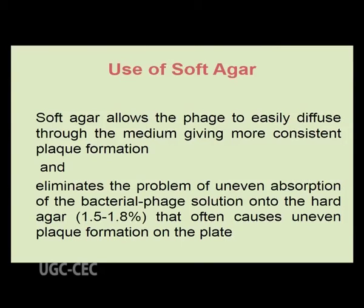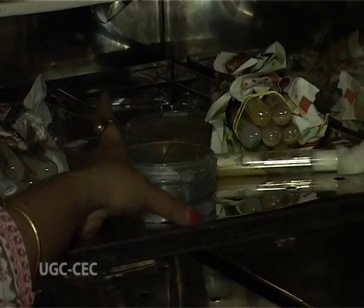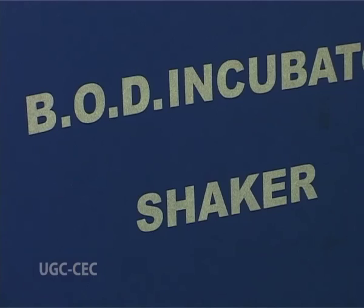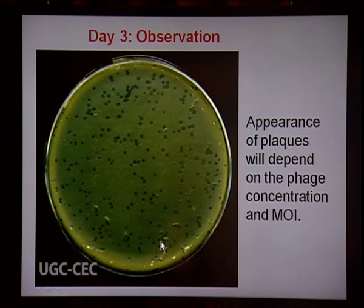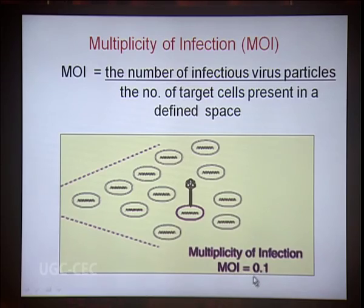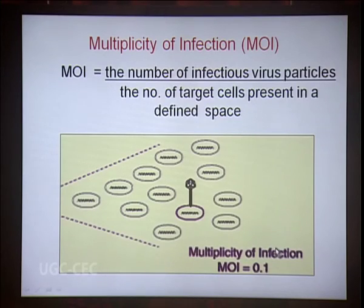On day 3, we observe and count the number of plaques. The appearance of plaques depends on phage concentration and also on the multiplicity of infection (MOI) — the ratio of the number of infectious virus particles to the number of target cells present in a defined space.